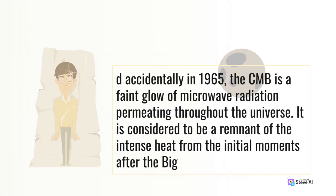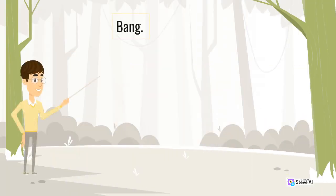Discovered accidentally in 1965, the CMB is a faint glow of microwave radiation permeating throughout the universe. It is considered to be a remnant of the intense heat from the initial moments after the Big Bang.